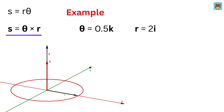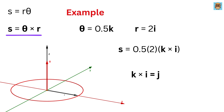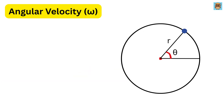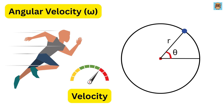To find the linear displacement vector s, we take the cross product of theta and r. So s equals 0.5k crossed with 2i. Using the standard cross product rule, k cross i gives j, so we get 0.5 times 2 times j, which equals 1 in the j-direction. That means the displacement is 1 meter along the y-axis — tangent to the circular path, exactly as expected.